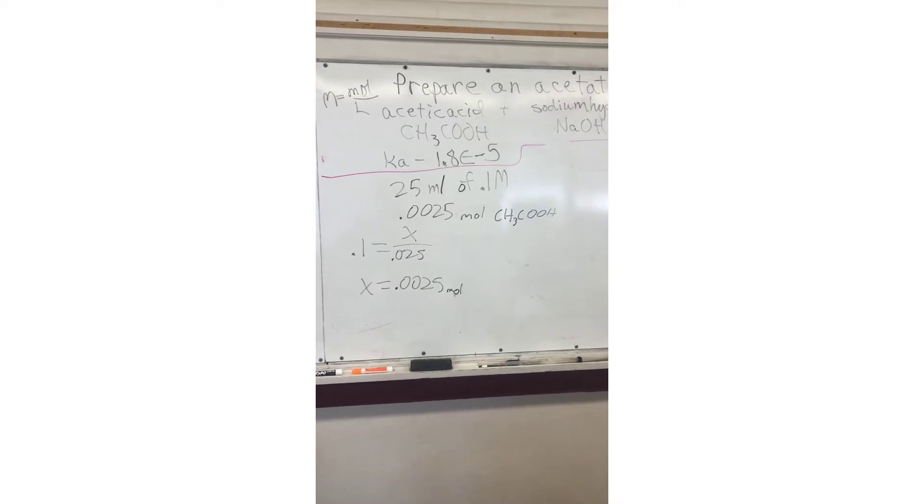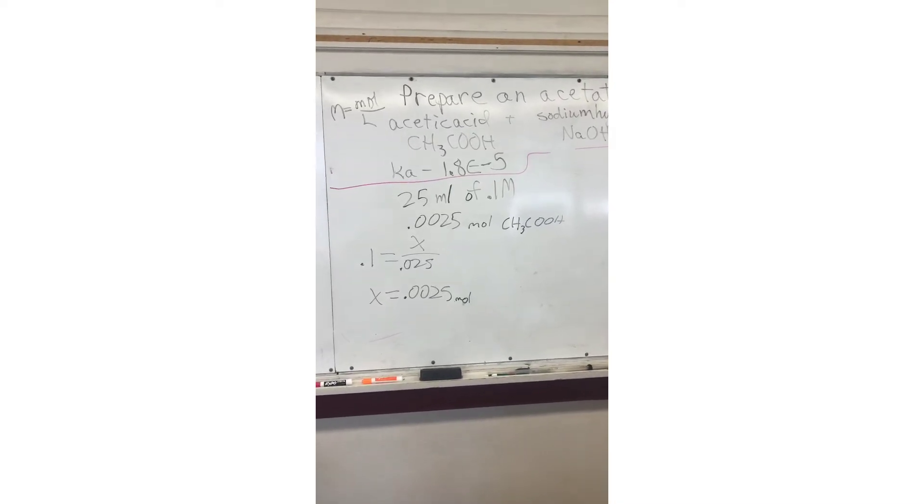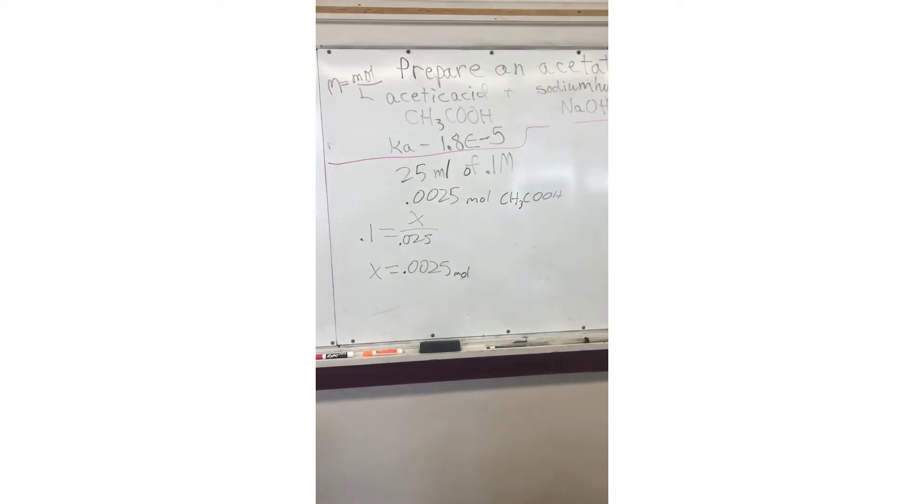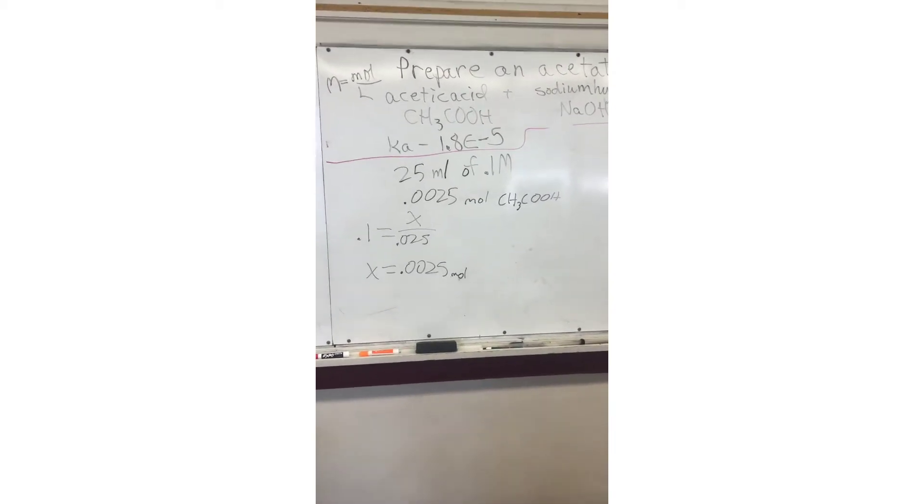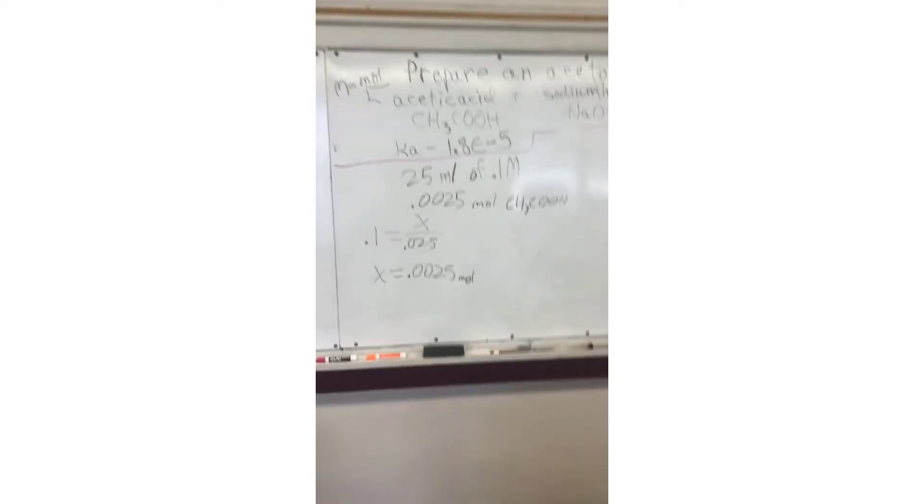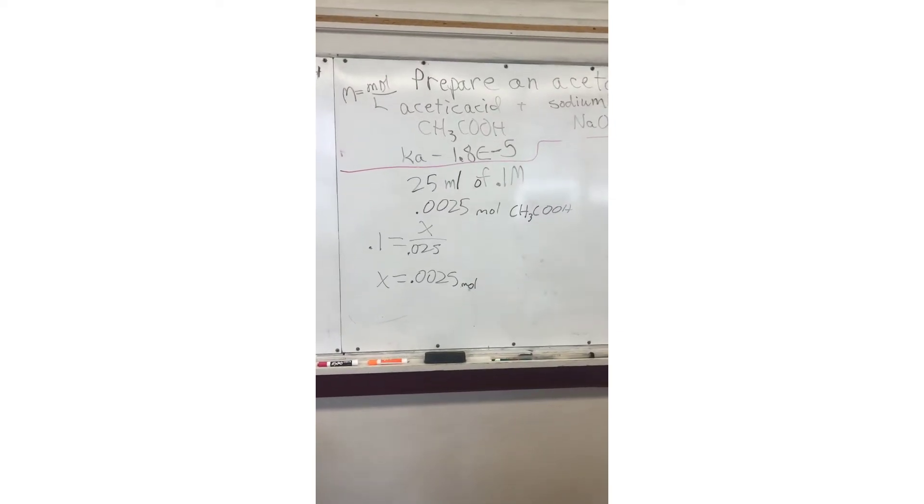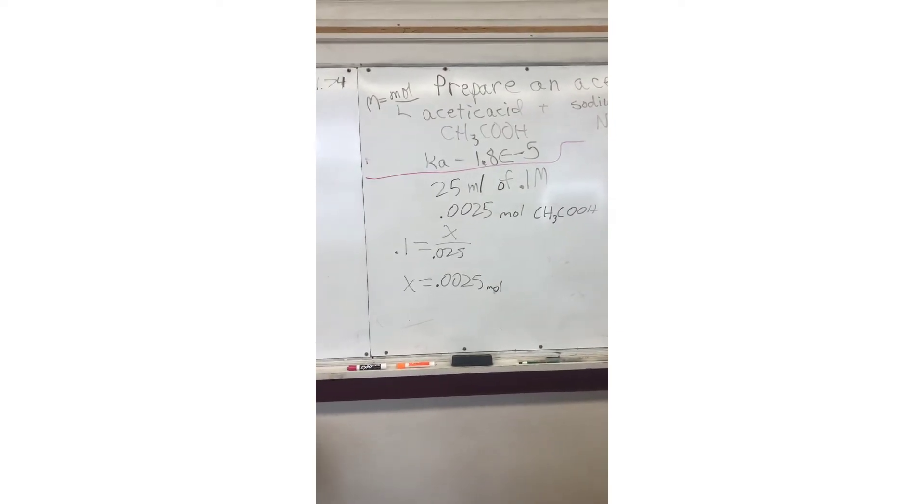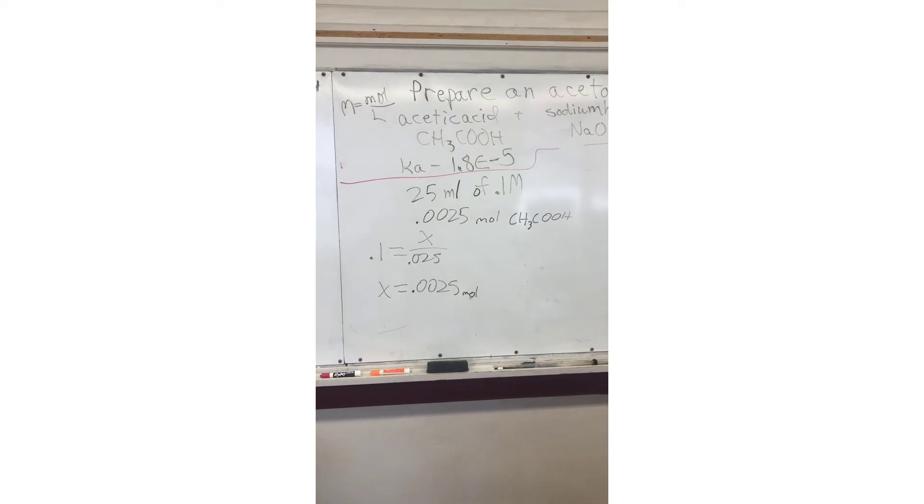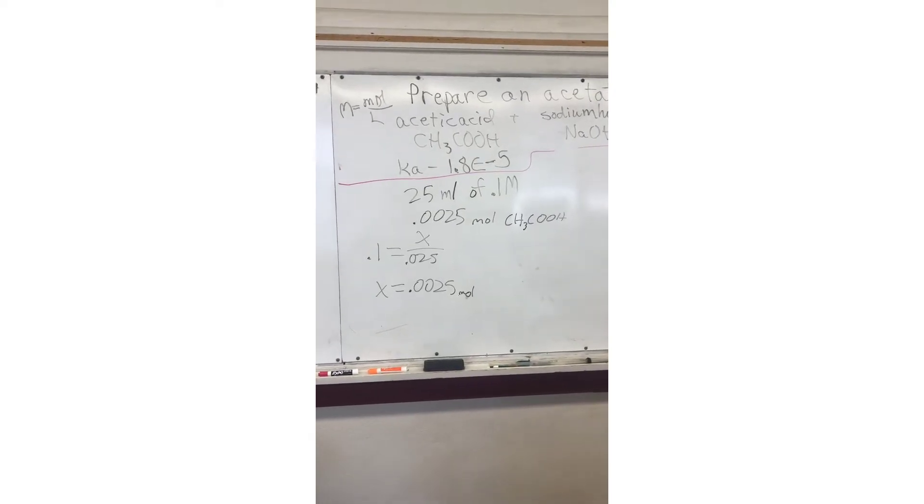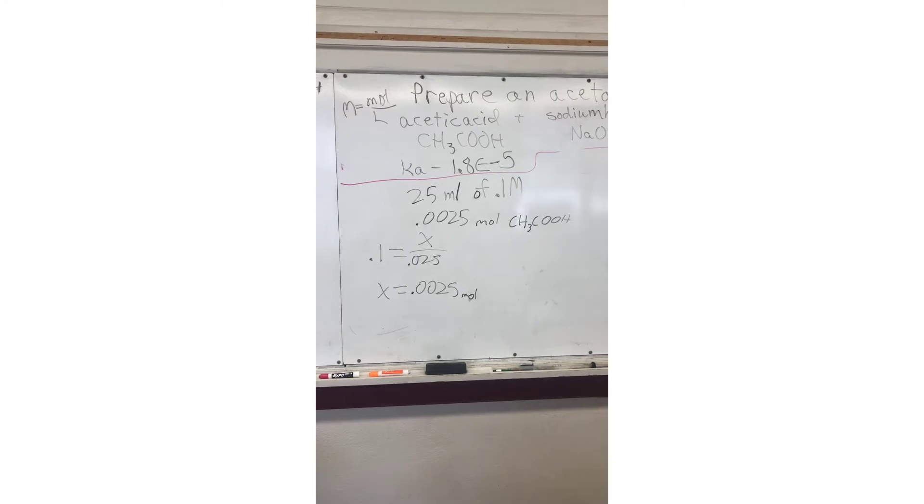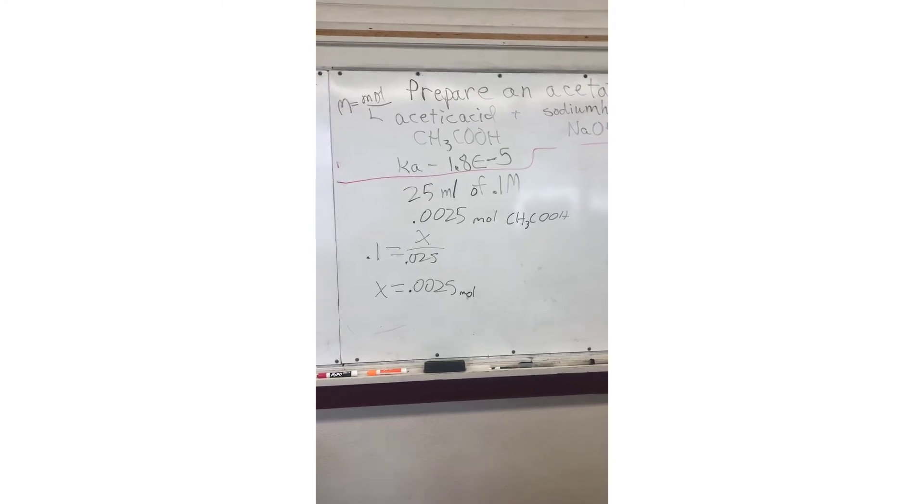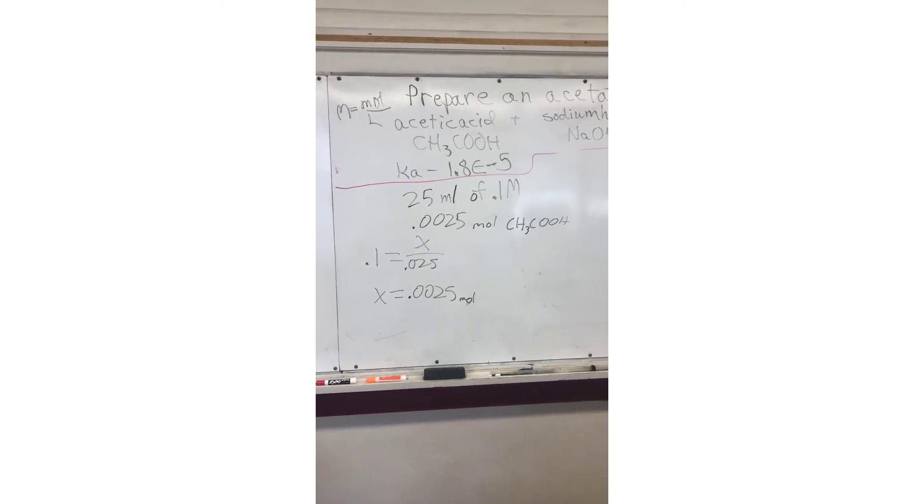The first step in preparing an acetate buffer is to determine how many moles of acetic acid we're going to need to carry out our reaction. We've determined that we want a solution of 25 milliliters at a 0.1 molarity concentration. We plug those variables into the molarity formula, which is molarity equals moles over liters, and we find that we need 0.0025 moles of acetic acid.